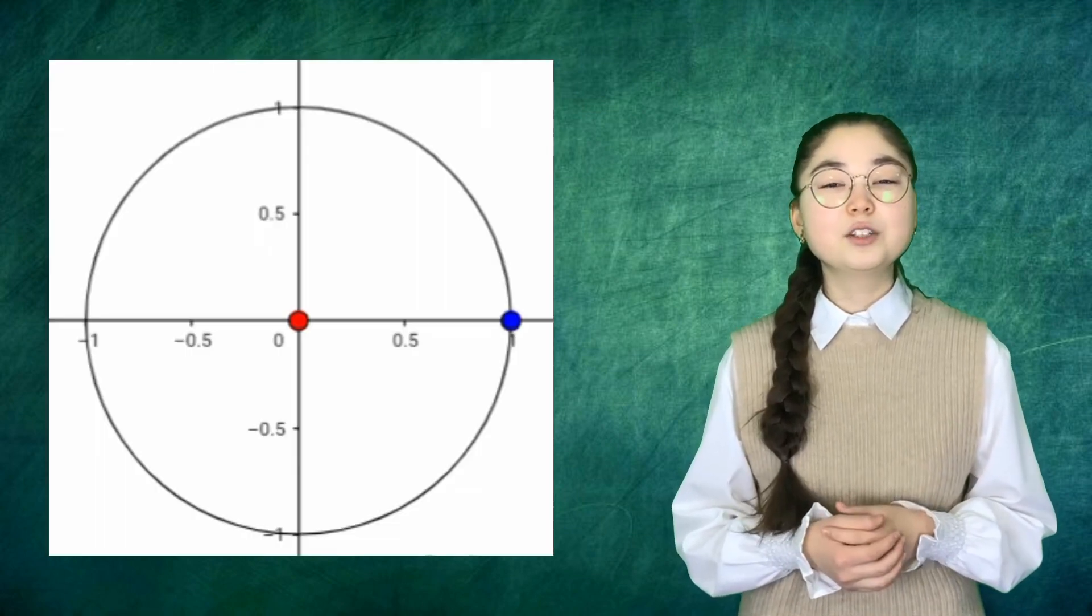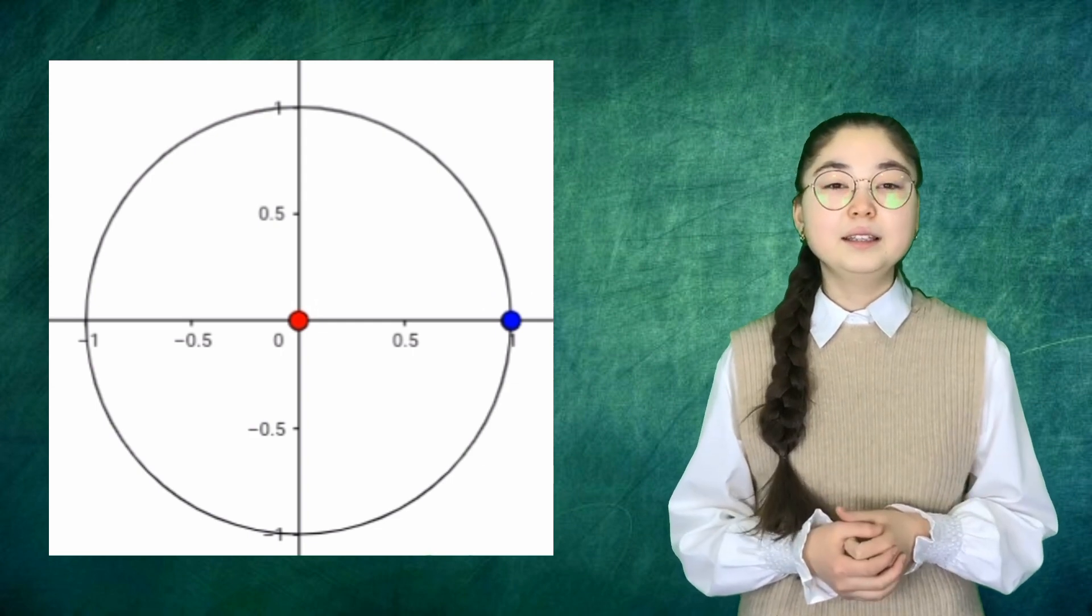The unit circle is a circle with a radius of 1. Being so simple, it is a great way to learn and talk about lengths and angles. The center is put on a graph where the x-axis and y-axis cross, so we get this neat arrangement here.